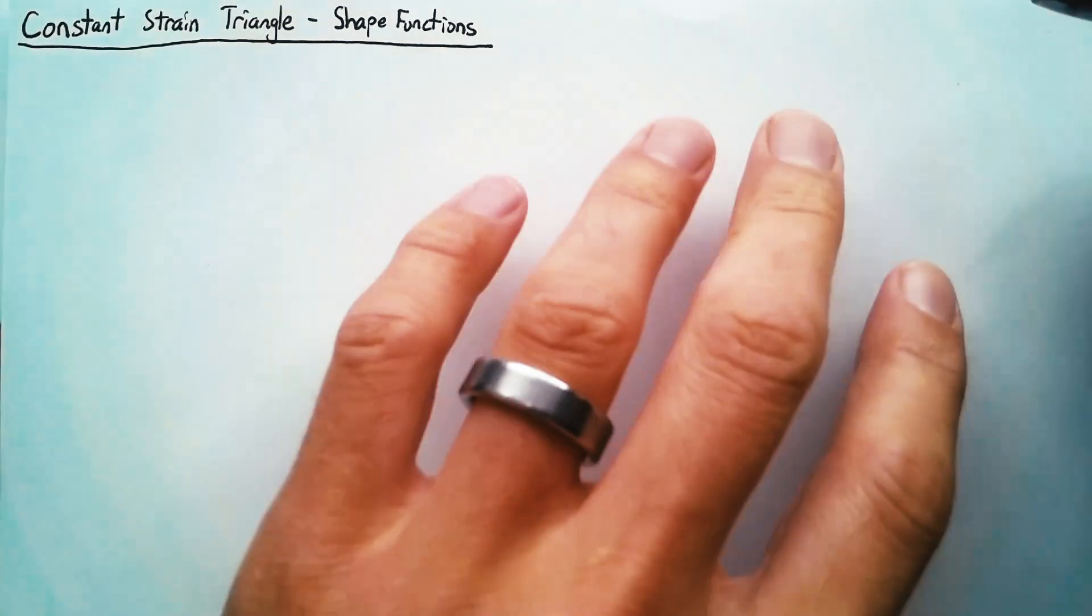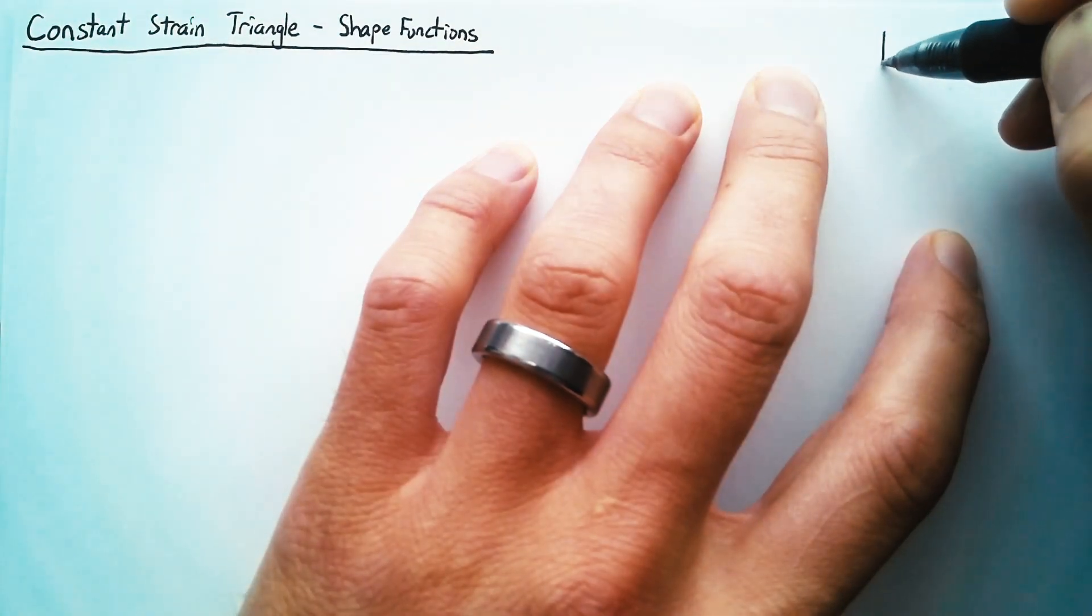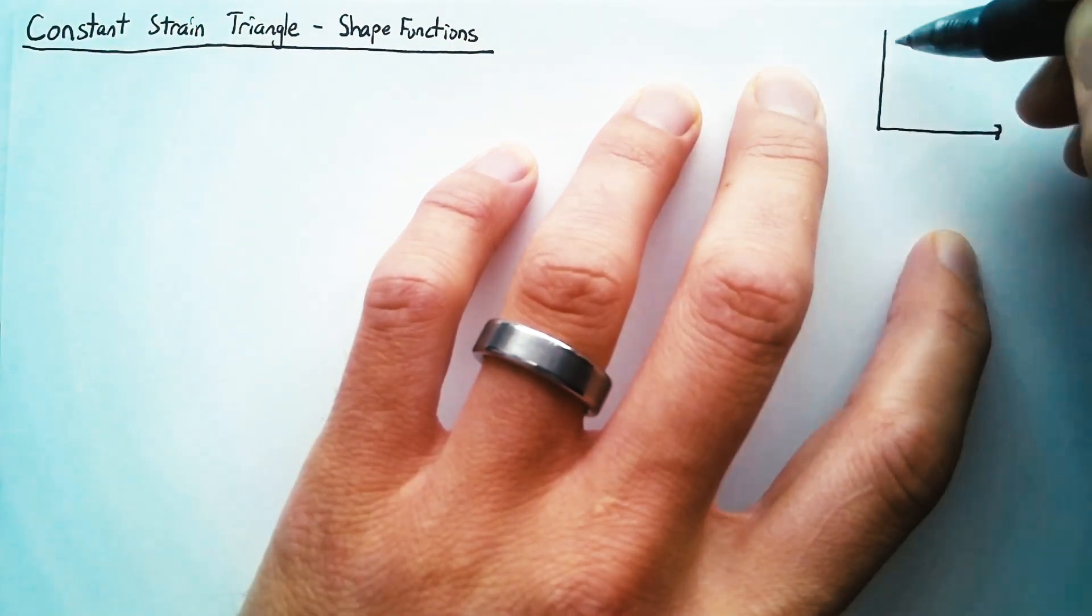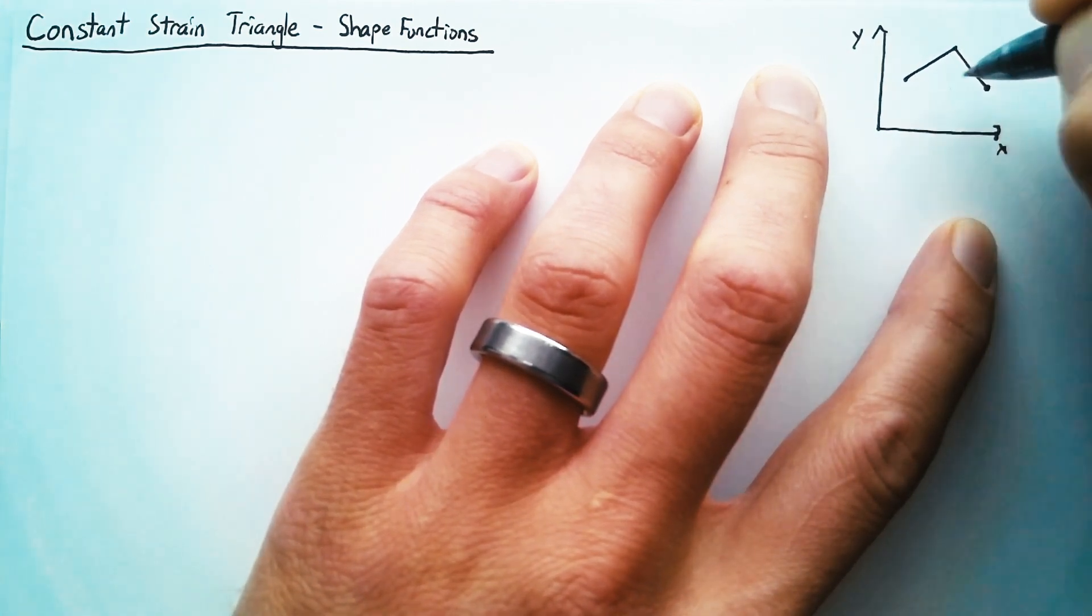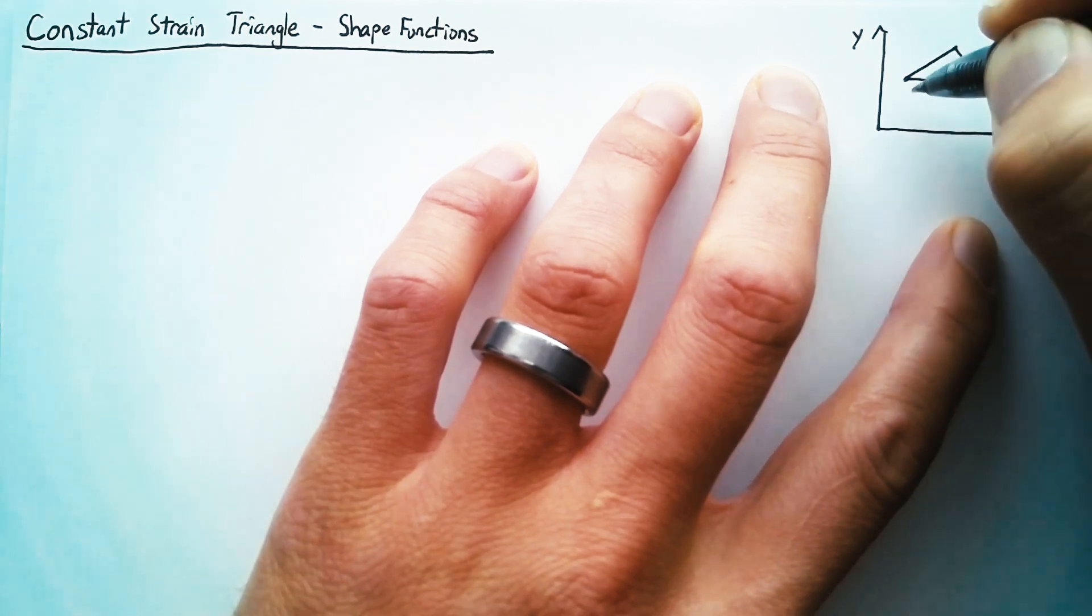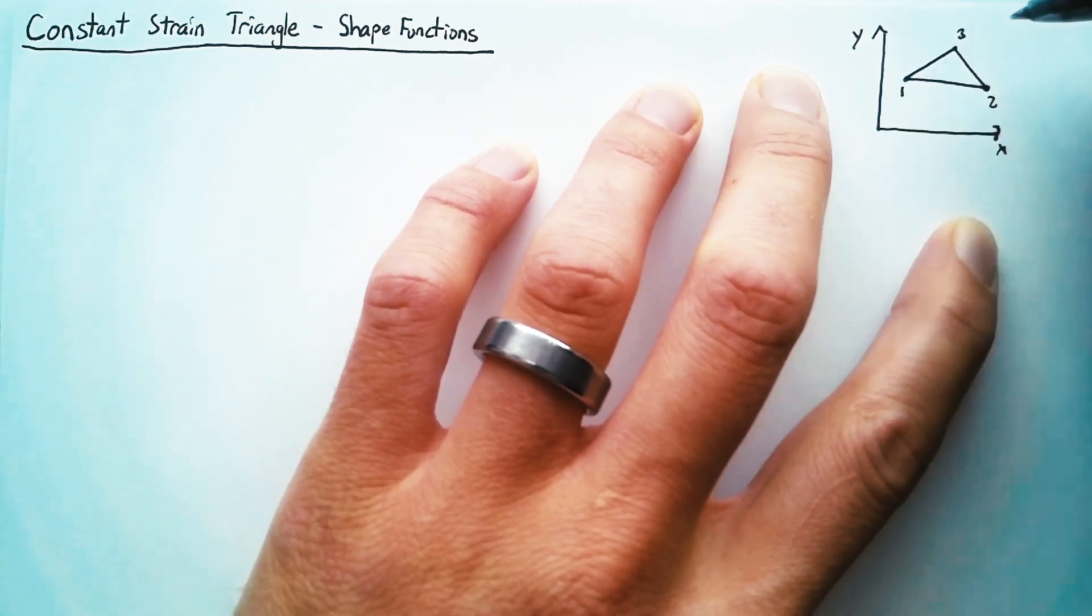So to start off, let's look at our constant strain triangle, which is a simple triangle that's composed of three nodes. We'll just call those nodes 1, 2, and 3.